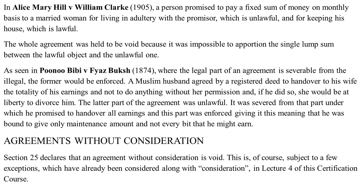In Puno BB vs. Fiyaz Boksh, where the legal part of an agreement was severable from the illegal, the former was held enforceable. A Muslim husband agreed by registered deed to hand over all his earnings to his wife and not to do anything without her permission — otherwise she could seek divorce. The latter part was unlawful and severed, leaving the provision that he was bound to give only the maintenance amount, not every bit he might earn.